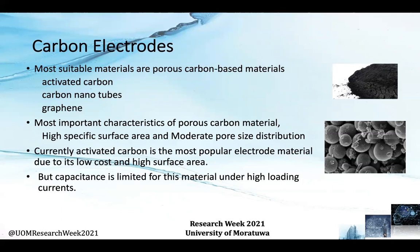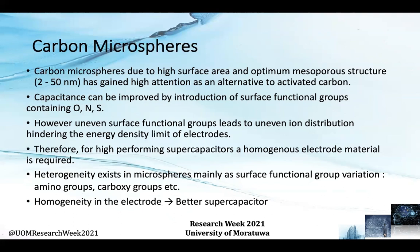Currently, activated carbon is the most popular electrode material due to its low cost and high surface area, but capacitance is limited under high loading currents. As an alternative, carbon microspheres, due to their high surface area and optimum mesoporous structure, have gained high attention. Mesoporous refers to the diameter of the pores, which is between 2 to 50 nanometers. The capacitance of carbon microspheres can be improved by introducing surface functional groups containing oxygen, nitrogen, and sulfur.